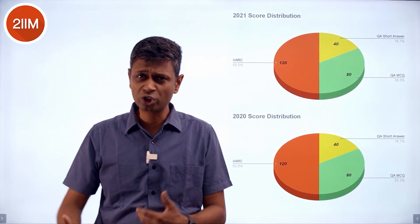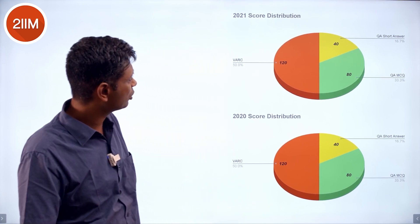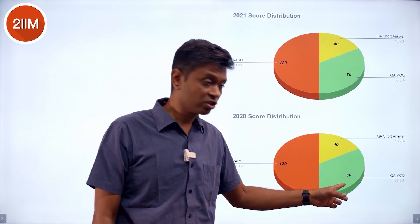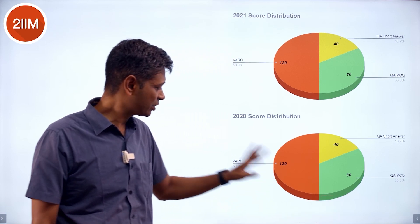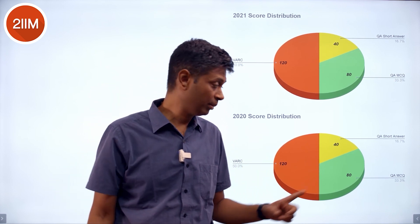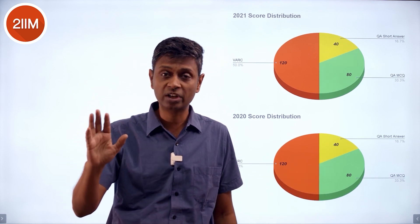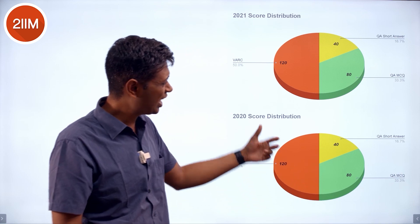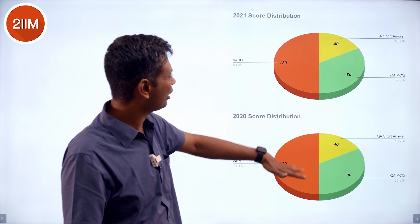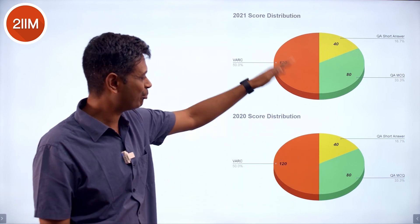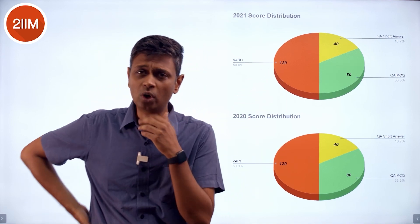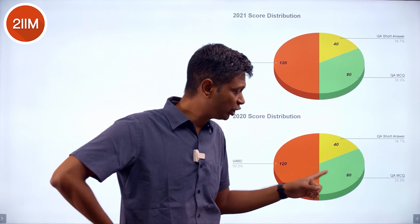Looking at score distribution for 2020 and 2021: in 2020 there were 10 short answer questions at 4 marks each, 20 MCQ questions at 4 marks each, and 30 verbal questions at 4 marks each. Verbal and MCQ carry negative marking — plus 4 for correct, minus 1 for wrong. Short answer is plus 4 for correct with no negative marking. The overall exam pattern remained broadly the same. Quant and verbal are broadly equal in raw marks, and within quant, MCQ carries slightly more raw weight than short answer — but this is not how your scores are actually distributed for selection.